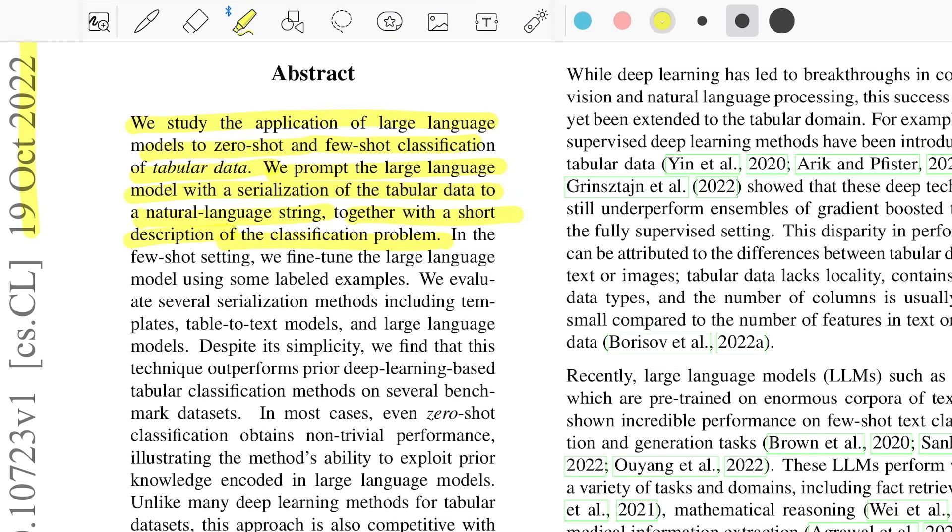So is that possible with large language models? That's the question this paper tries to answer. They serialize the tabular data with natural language strings because that's something you will do since you're using language models trained entirely on text strings and don't really understand what a column or table data would mean. You have to serialize them, convert them into a natural language query, and then pass it on to these models. On top of it, they also use short descriptions of the classification problem that essentially act as a prompt for these language models during prediction.